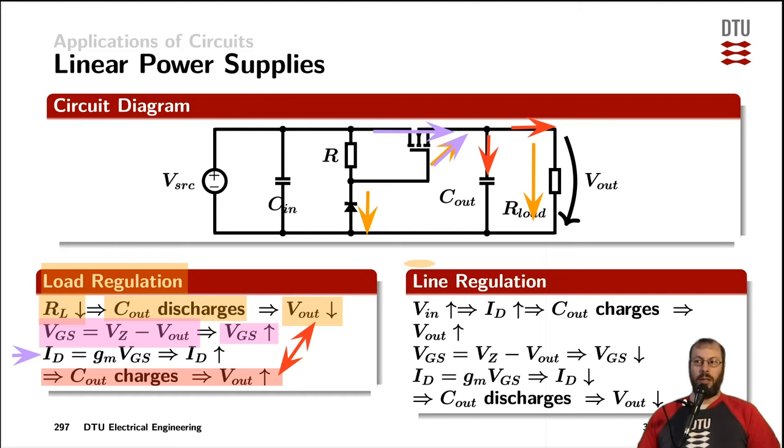Similarly, for a changing input voltage, we call that line regulation. For example, if the input voltage is rising, that means for the given transconductance of the MOSFET, the drain current would be rising as well and Cout would get charged more than it got charged before. And that again means that the output voltage is about to rise. Taking into account the same loop as we used for Kirchhoff's voltage law in the load regulation case here, we get the same equation.